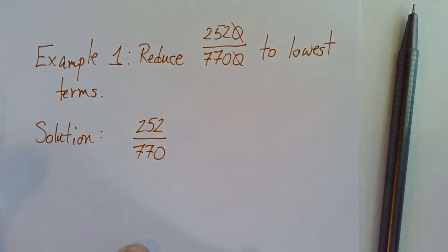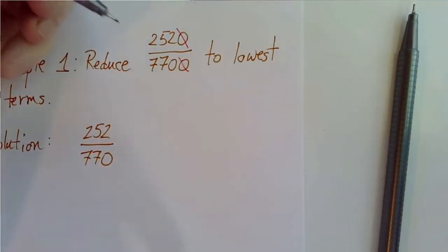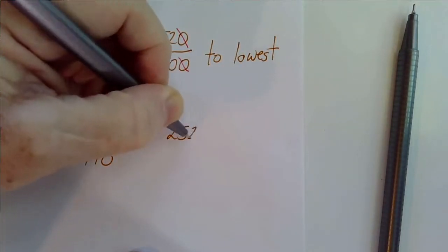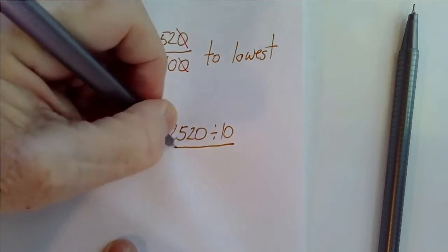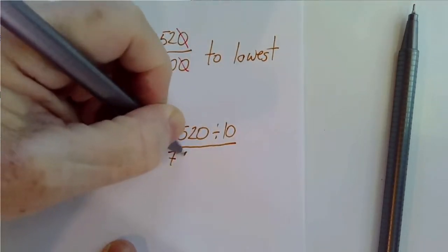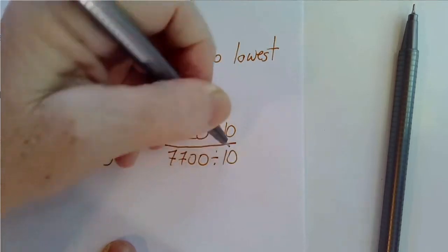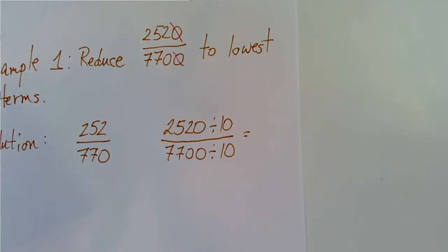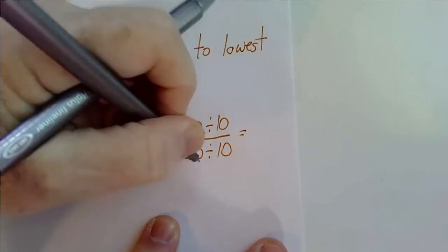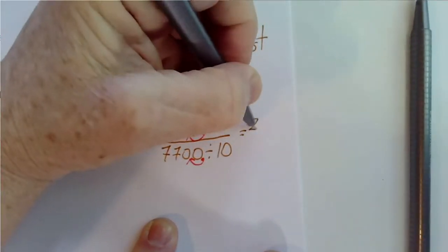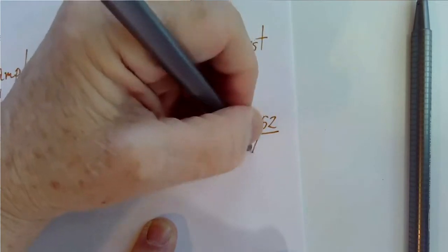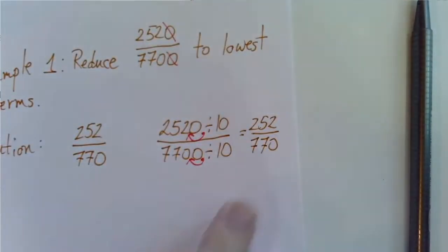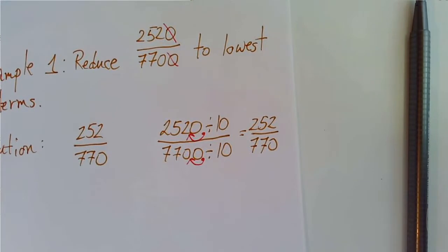And notice that striking off a 0 is exactly the same as dividing by 10. So if I had 2,520 divided by 10 over 7,700 divided by 10. Dividing by 10 moves the decimal one place to the left. So now we have in the numerator 252 and in the denominator 770. And you see that's exactly what we got just by striking off a 0.